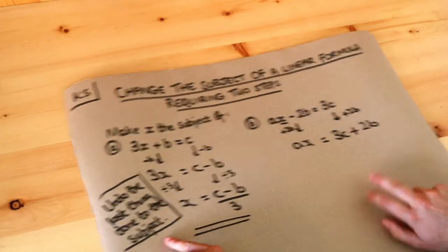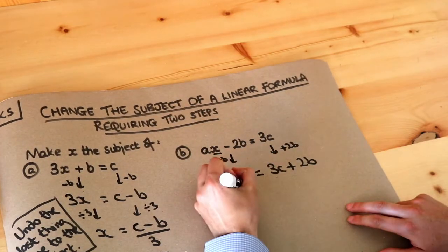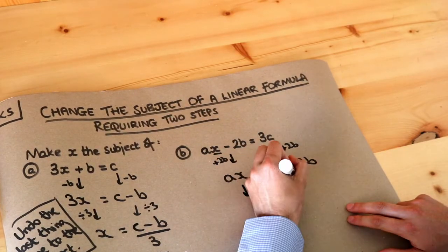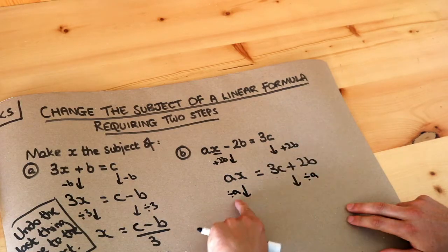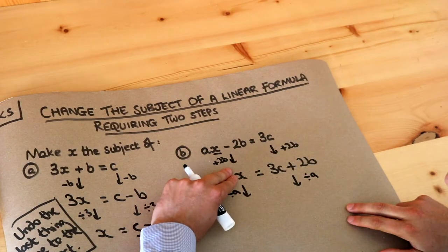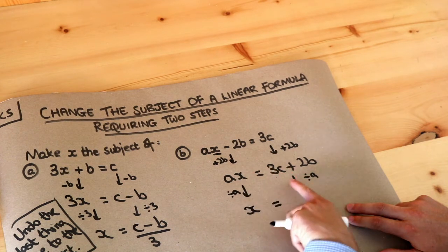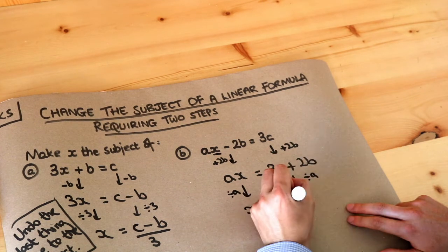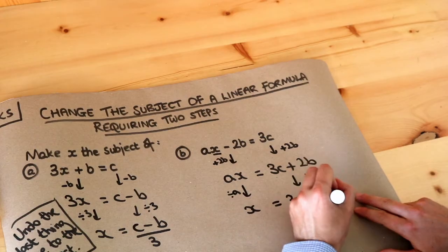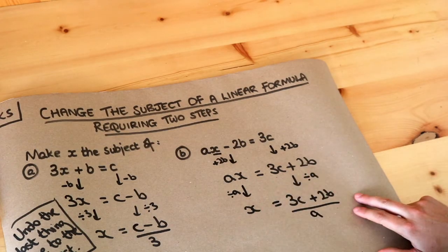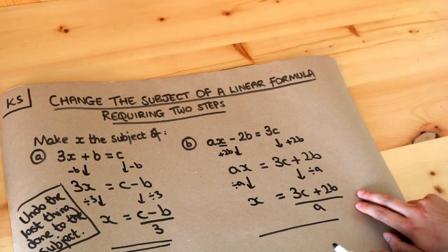Then again undo the last thing done to the subject — x was times by a. So we get rid of it by dividing both sides by a. Dividing by a cancels out the times by a leaving just x. And putting the right hand side over a has the effect of dividing by a. That's the final answer because x is on its own on one side of the equation.